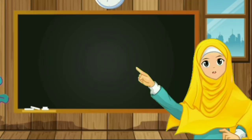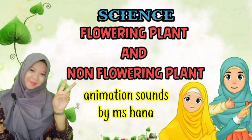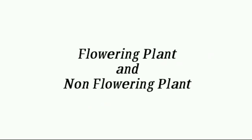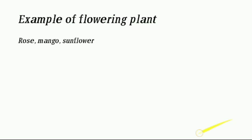Today we are going to learn about flowering plants and non-flowering plants. Flowering plants grow flowers and use seeds to reproduce. Examples of flowering plants are rose, mango, and sunflower.